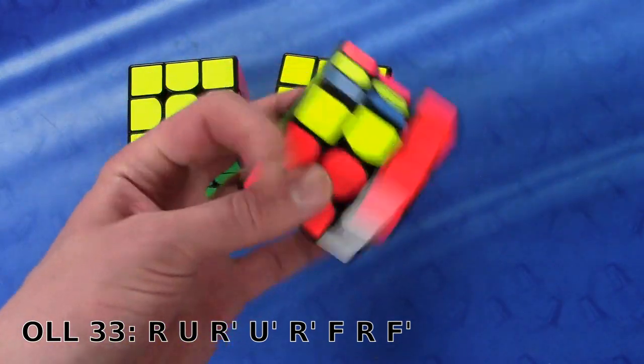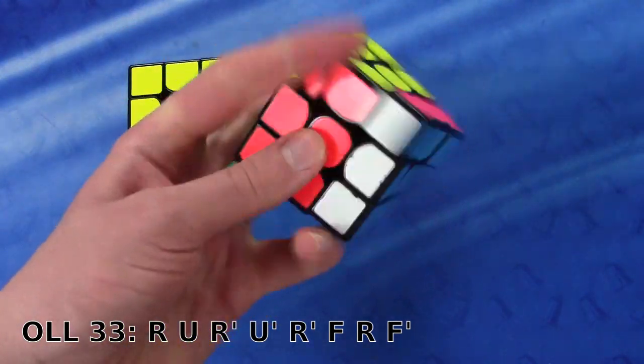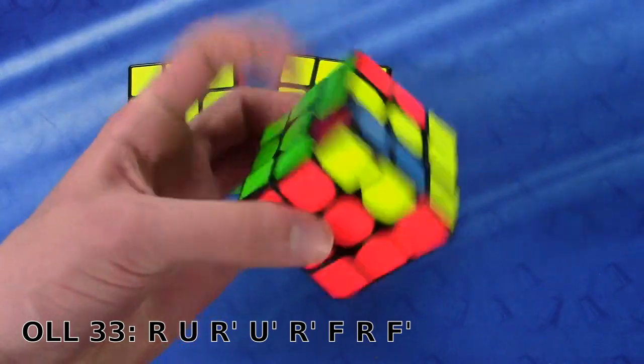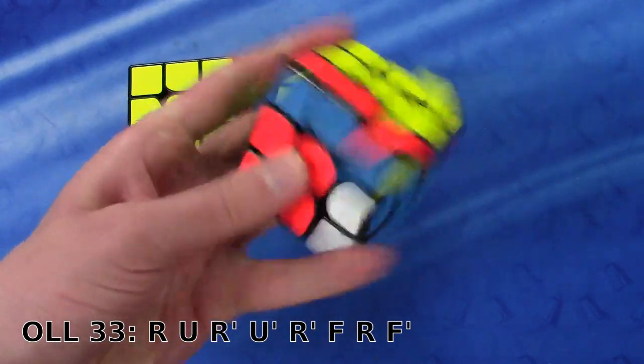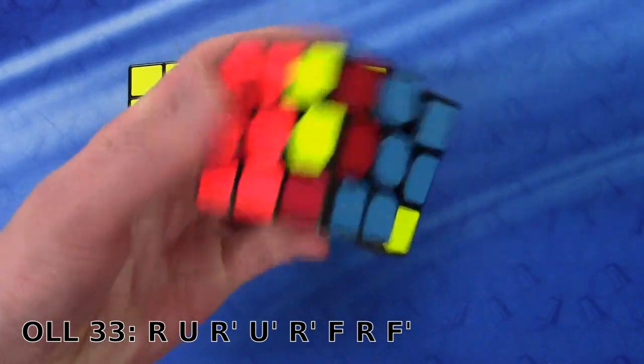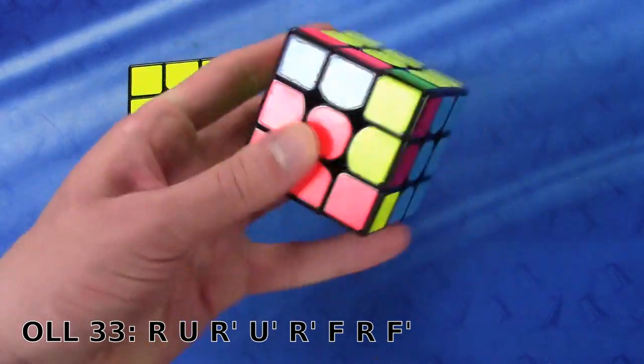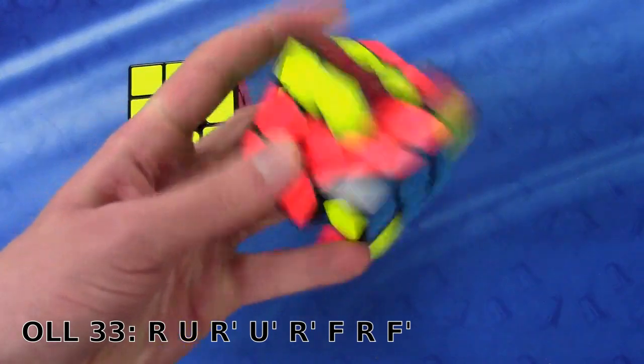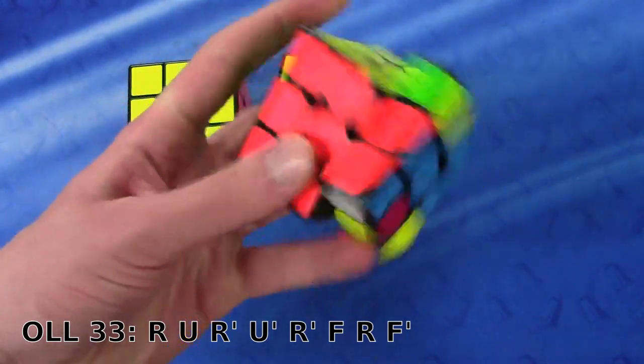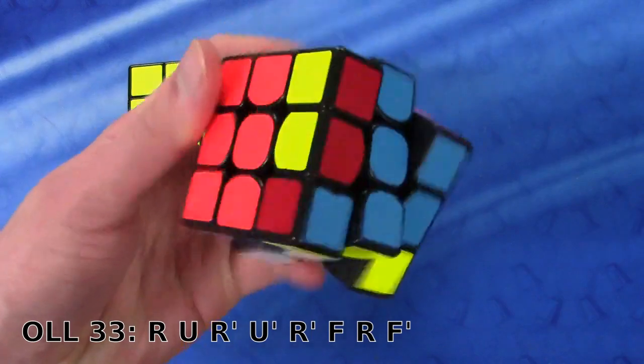So this is what it looks like. As you can see, the last F' sometimes locks up a little bit, but usually it should be pretty nice, and it's definitely a lot faster than rotating.